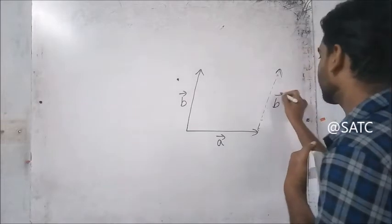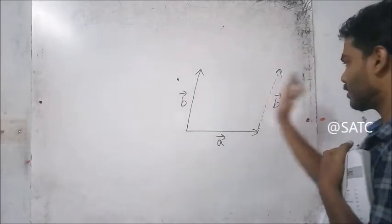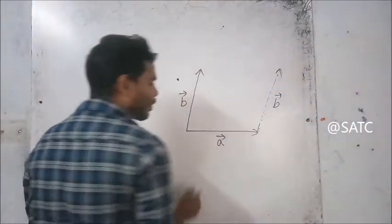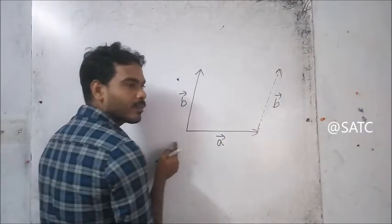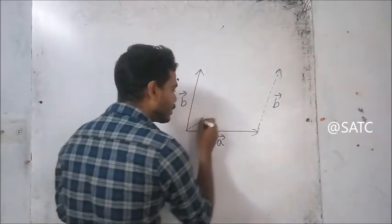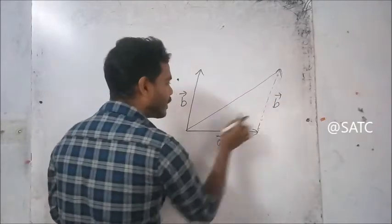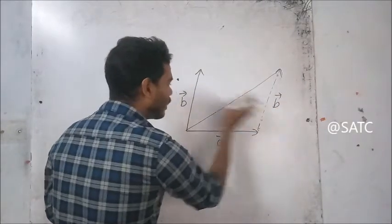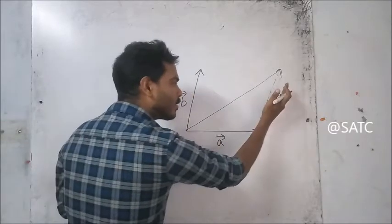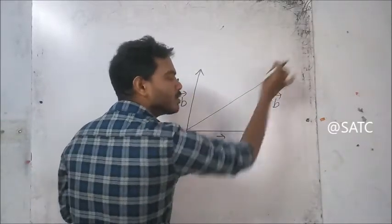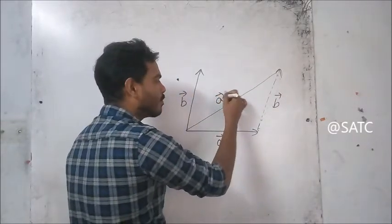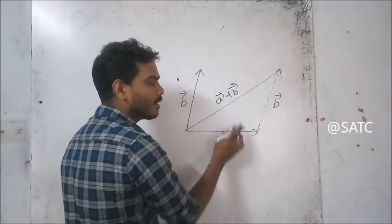This is Vector B. Then this is the sum of this and this and all. So this is A plus B vector.